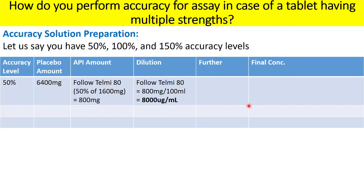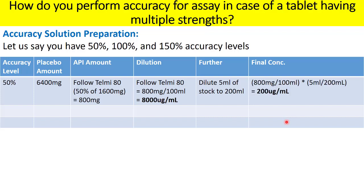For further dilution, follow the same procedure: dilute 5 ml of the stock to 200 ml. This gives a final concentration of 200 µg/ml. Recalling that the final test concentration for all three strengths is 400 µg/ml, the 50% accuracy level has resulted in exactly half of that — so we are on the right track.